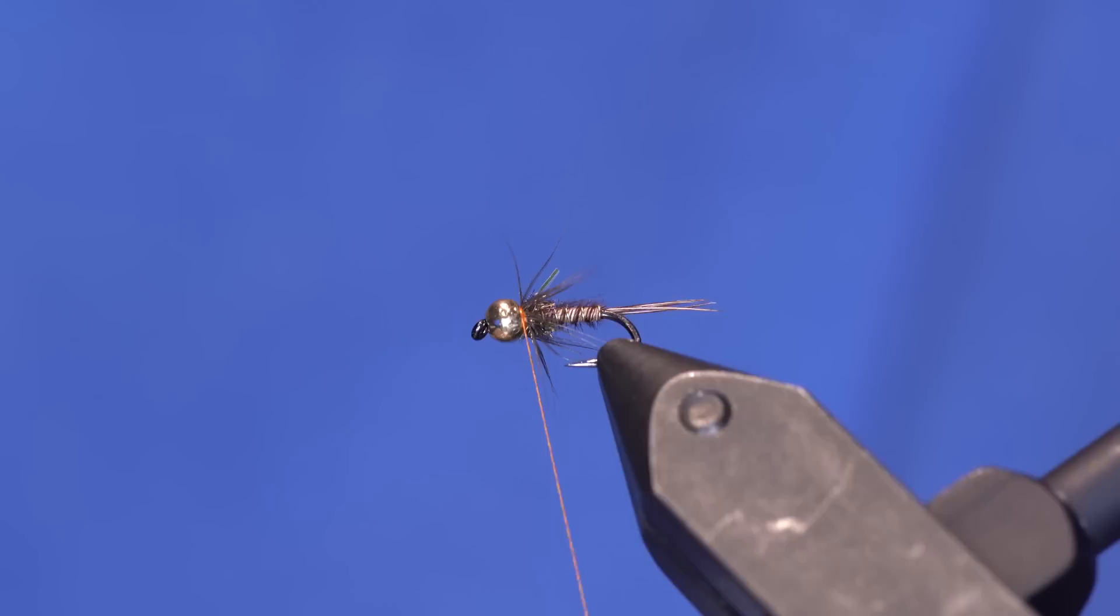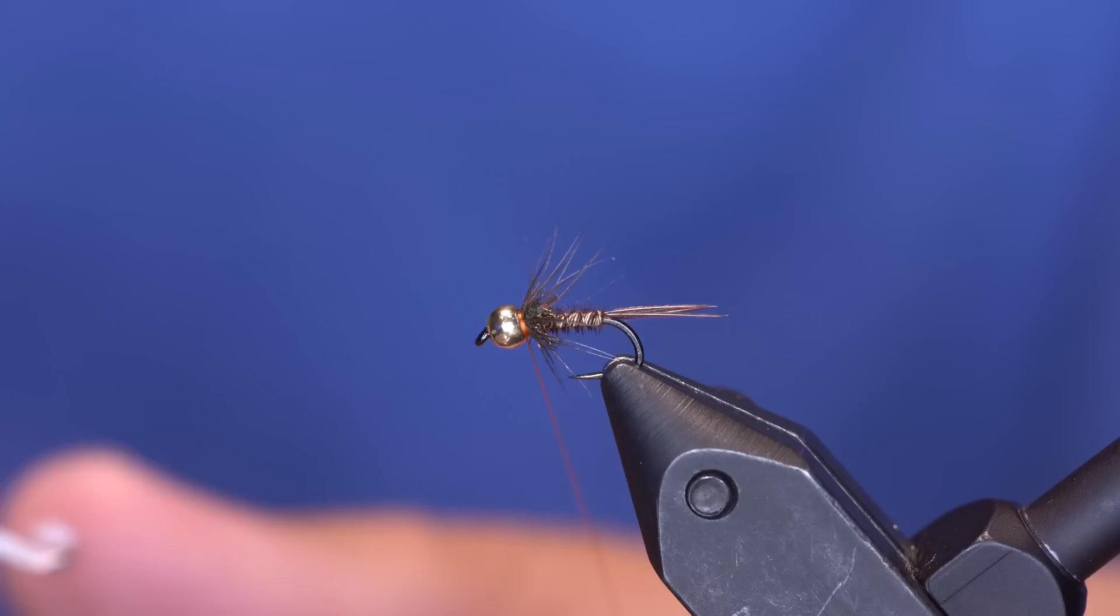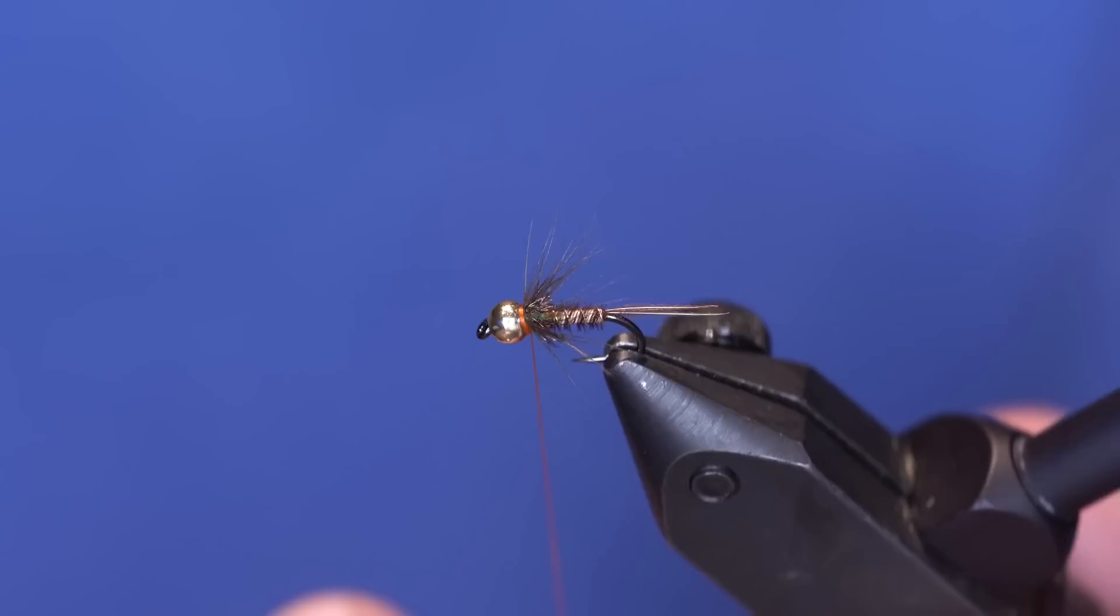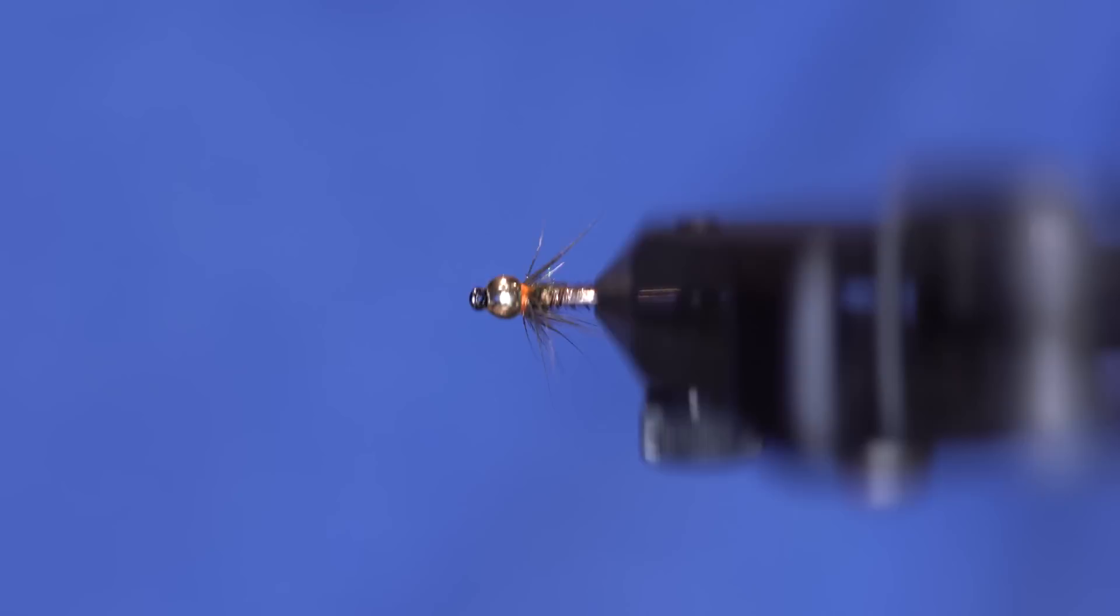Okay, so that just kind of barely dirties it up. And then if I do it right, you can see that my thread ends up kind of uniformly right behind the bead. And so with my whip finish, that's going to add just a little bit of color to the fly, which is what I want. You can see nice and uniform. It's got a little bit of flash under the wing or under the hackle.